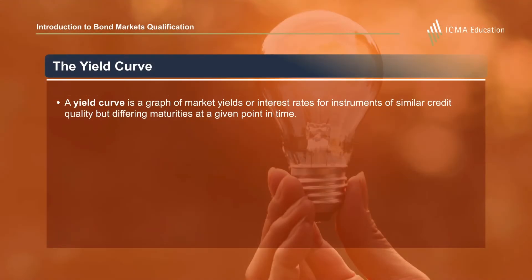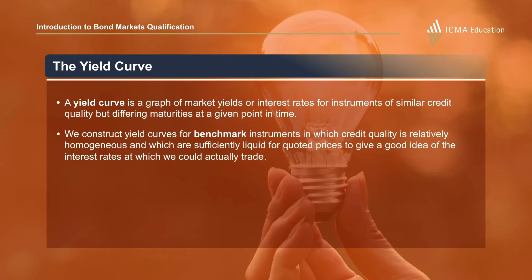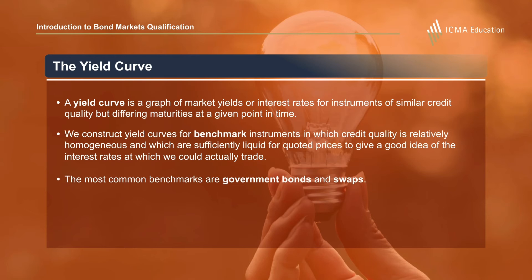A yield curve is a graph of market yields or interest rates for instruments of similar credit quality but differing maturities at a given point in time. We construct yield curves for benchmark instruments in which credit quality is relatively homogeneous and which are sufficiently liquid for quoted prices to give a good idea of the interest rates at which we could actually trade. The most common benchmarks are government bonds and swaps.